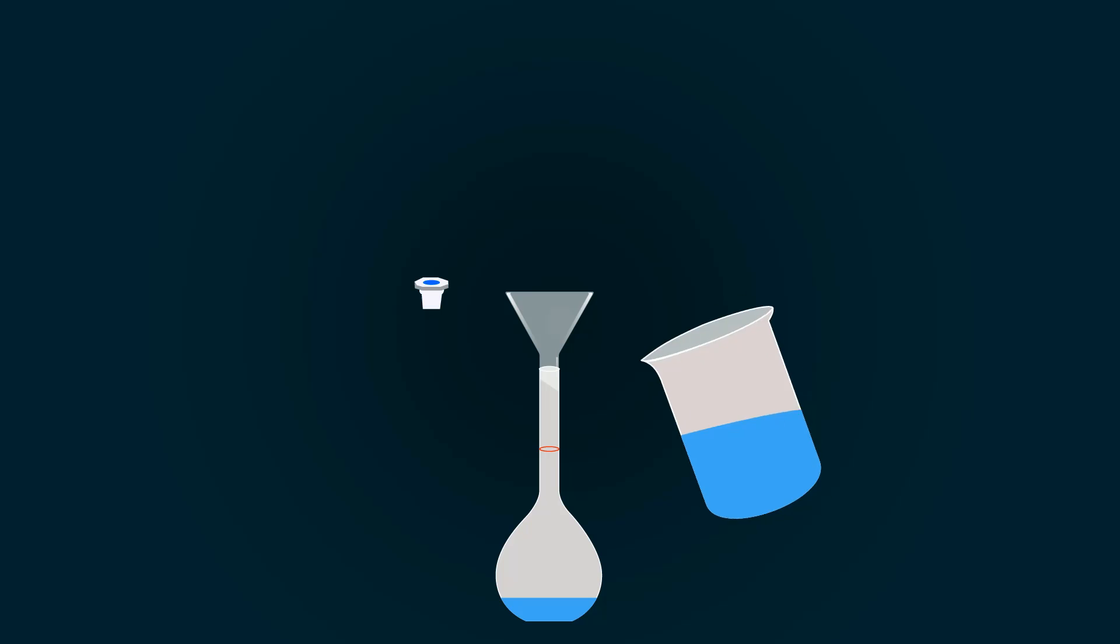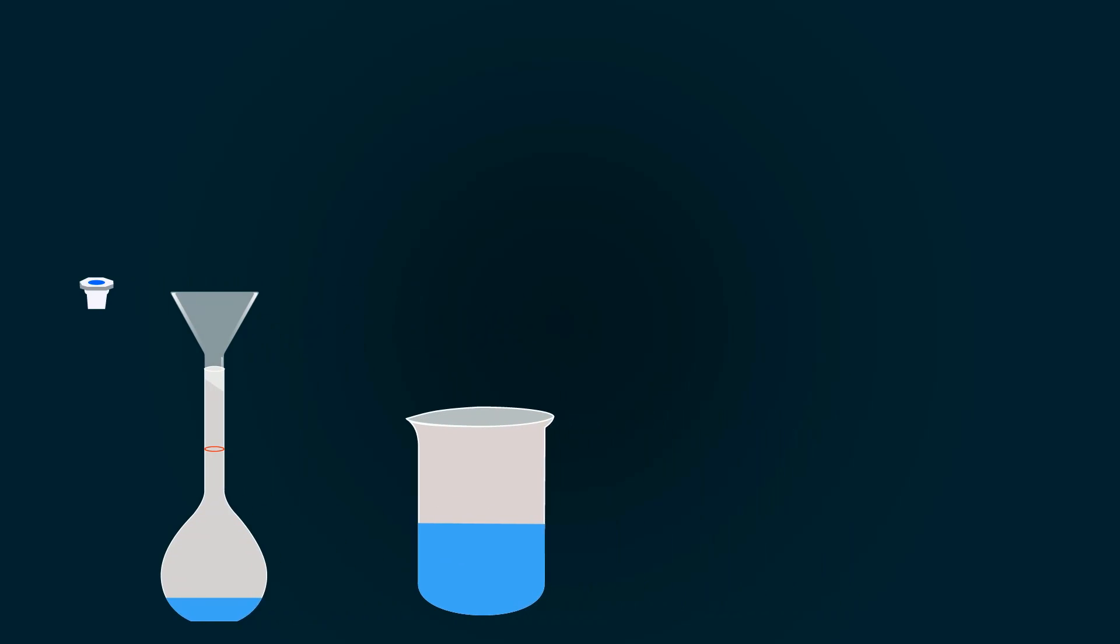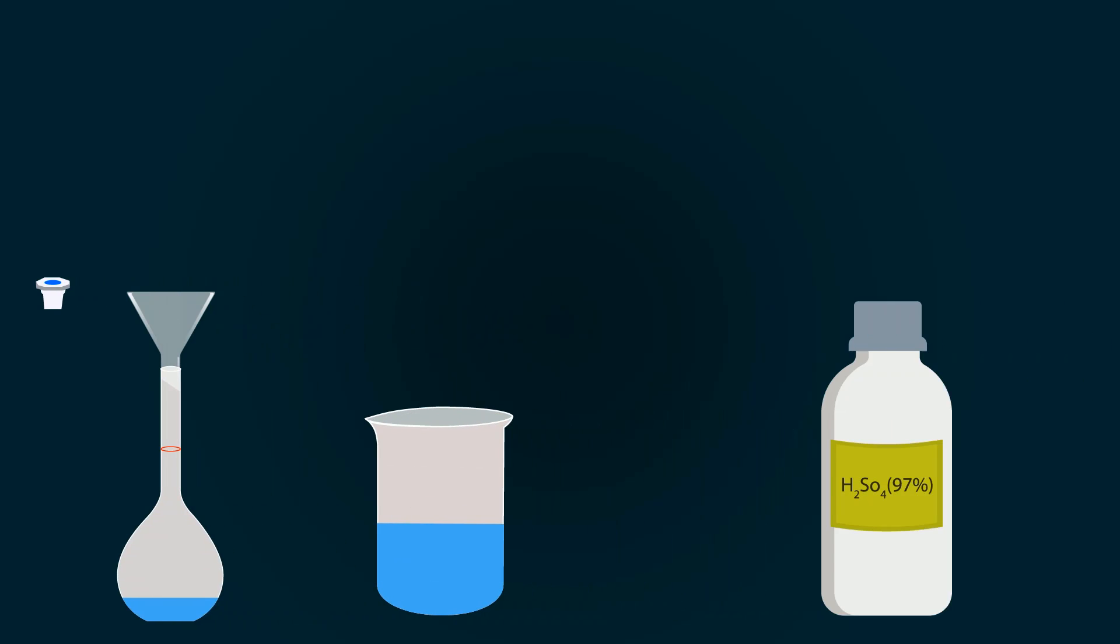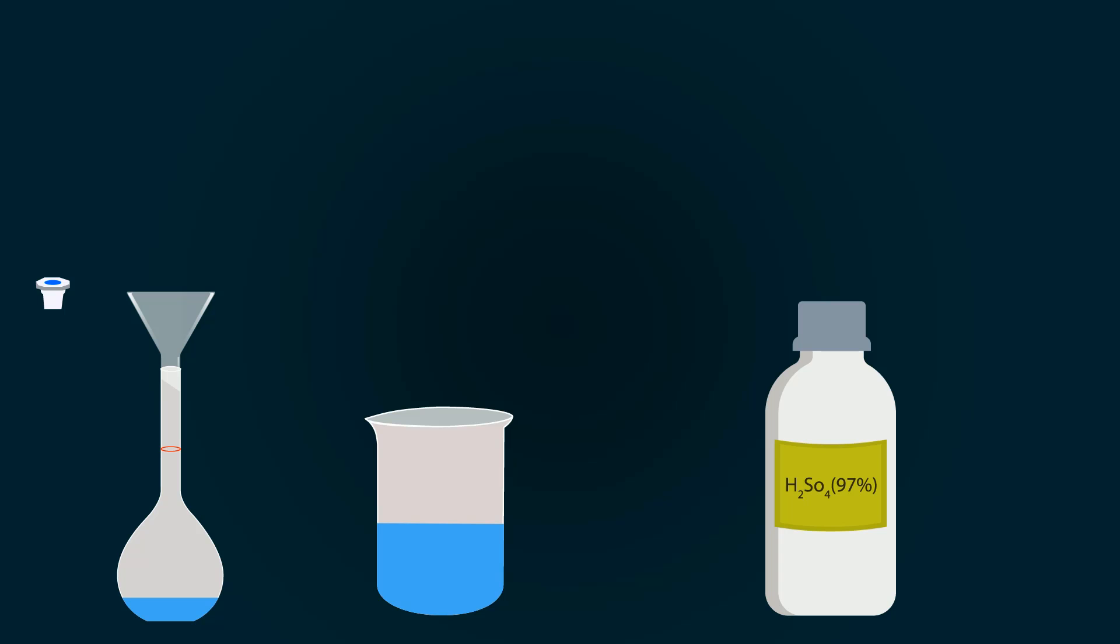Now put H2SO4 by using a pipette. Open up the bottle and start pipetting out our required volume. Now put this into the measuring flask.